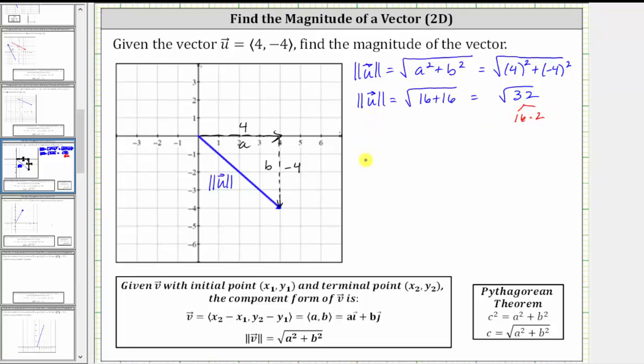So we can say the magnitude of vector u is equal to, again, the square root of 32, which is equal to the square root of 16 times the square root of two. The square root of 16 is equal to four. Therefore, the exact magnitude is four square root two.